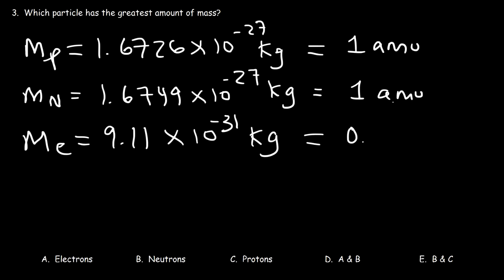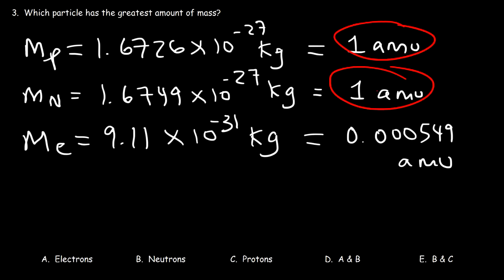The mass of an electron is about 0.000549 atomic mass units — far lighter than either the proton or neutron. The atomic mass of an element is based on the number of protons and neutrons, because the electron is so light relative to them that its mass is considered negligible. So the particle with the greatest amount of mass is the neutron — it is slightly heavier than a proton.